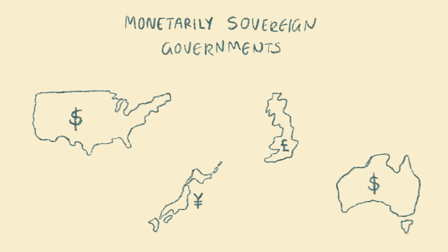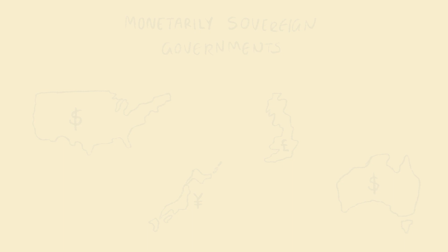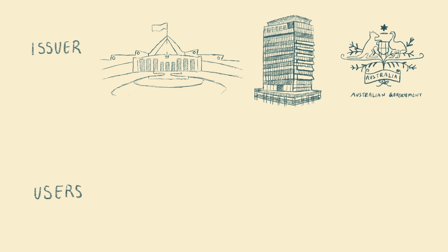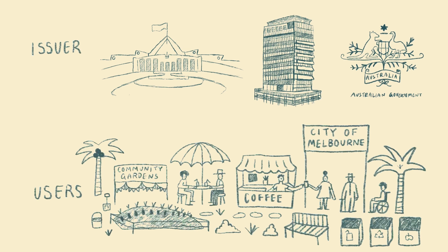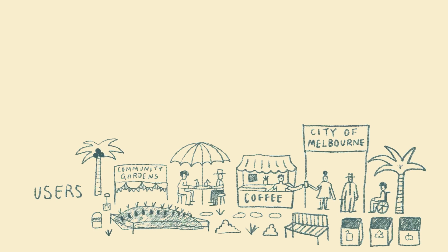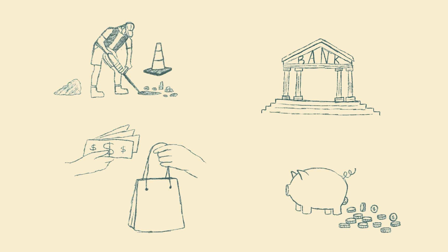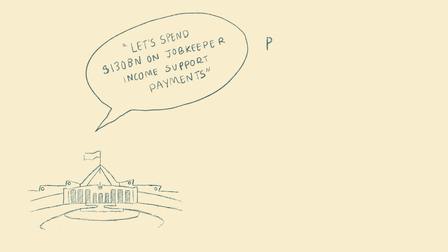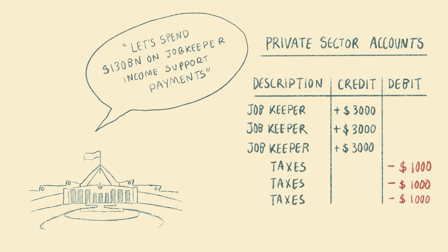There is a huge difference between a currency issuer, such as a national government, and a currency user, such as an everyday person, a household, a private business, or a local government. Currency users must, by definition, fund their spending by either working, borrowing, selling something, or by running down savings — they need to get money before they can spend it. A national government is a currency issuer: it creates new currency each time it spends and deletes currency out of the economy when it taxes.